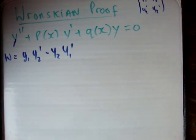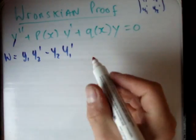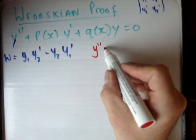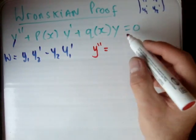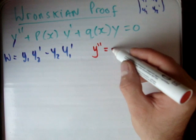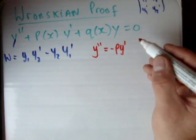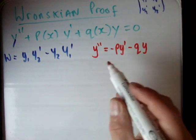If you look at your differential equation, you can rearrange it such that y double prime becomes — putting everything else over to the other side — y double prime is equal to negative p·y prime minus q·y.